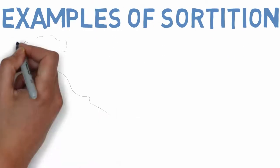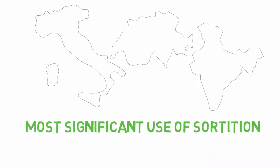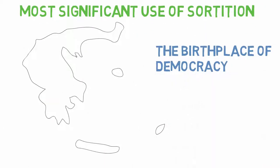We can see examples of sortition throughout history in Italy, Switzerland, and India. Perhaps the most significant use of sortition was in Athens, Greece, the birthplace of democracy.